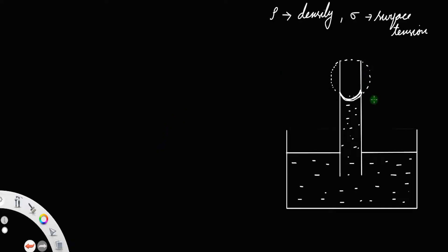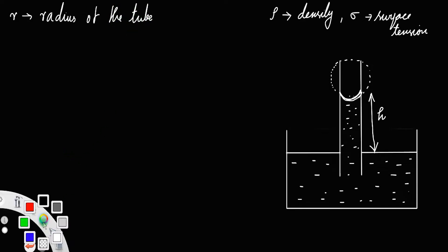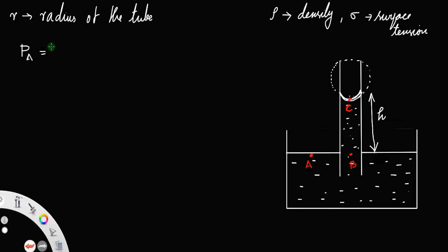Let h be the height of the liquid raised and let r be the radius of this tube. Let us take three different points on the liquid: point a, point b, and point c. Since points a and b are on the same horizontal level, we have pressure at a equal to pressure at b.